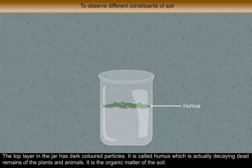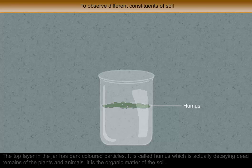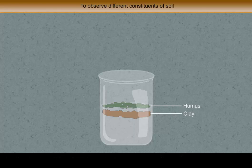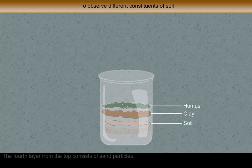The top layer in the jar has dark colored particles. It is called humus, which is actually the decaying dead remains of plants and animals — it is the organic matter of the soil. The second layer from the top has very fine particles of clay, which settles down very slowly.